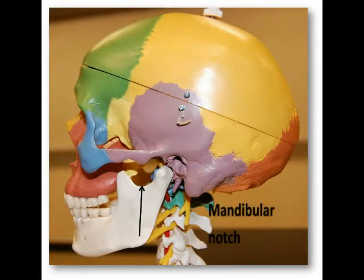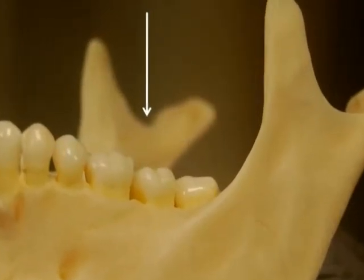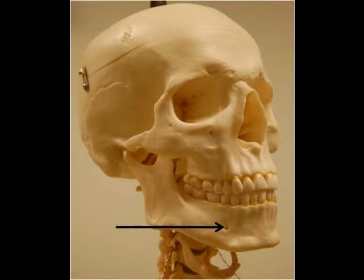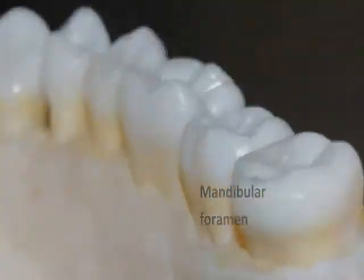The mandibular notch is the curved cutout region in between the two processes. There's a pair of foramina located on the mandible: the mental foramen and the mandibular foramen.